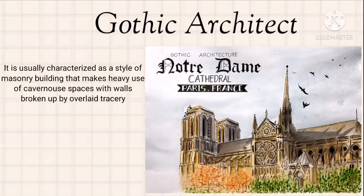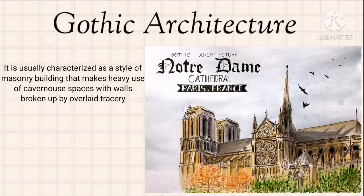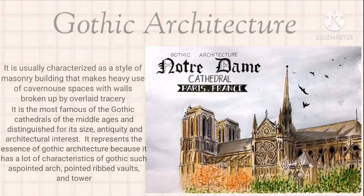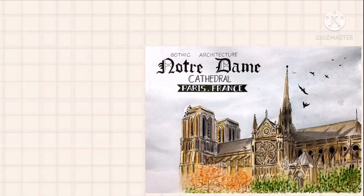Gothic architecture is usually characterized as the style of masonry buildings that makes heavy use of cavernous spaces with walls broken up by ornate tracery. Notre Dame Cathedral is the most famous of the Gothic cathedrals of the Middle Ages, distinguished for its size, antiquity, and architectural interest. It represents the essence of Gothic architecture with characteristics such as pointed arches, pointed ribbing, and towers. This structure is Notre Dame Cathedral in Paris, France.